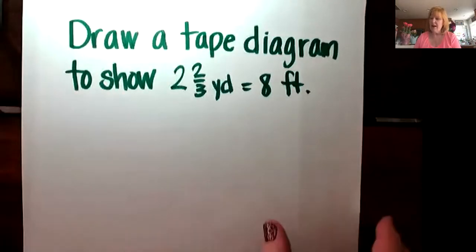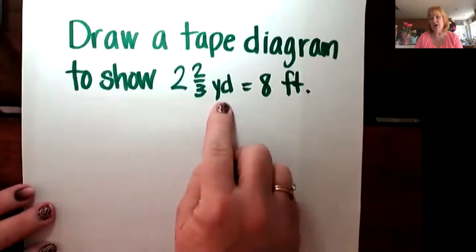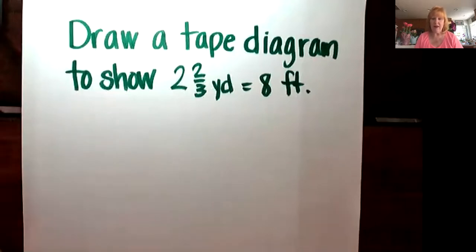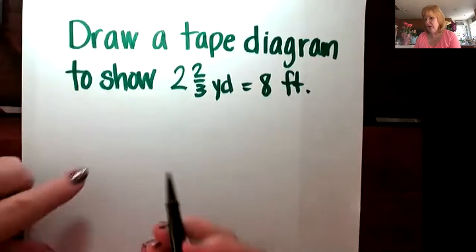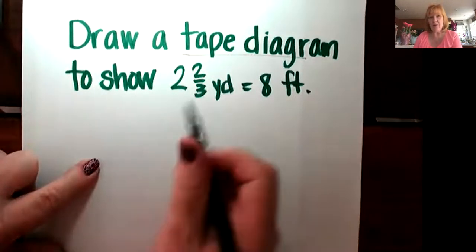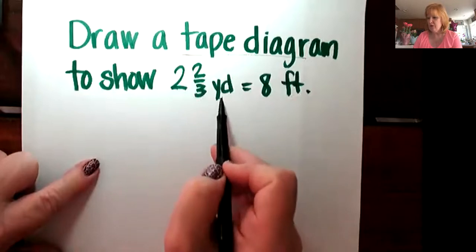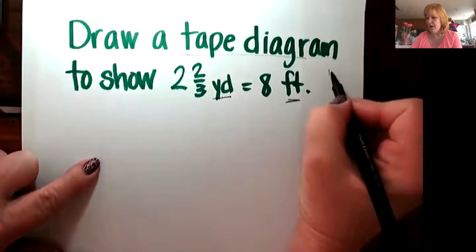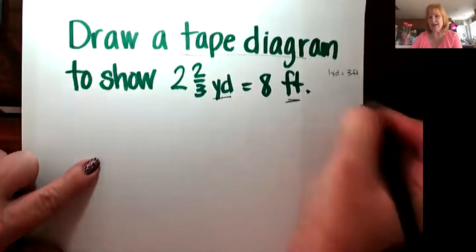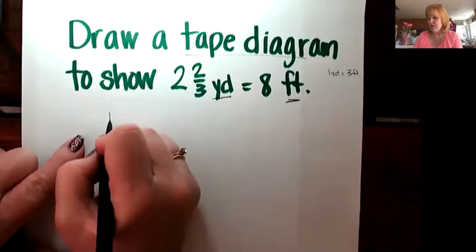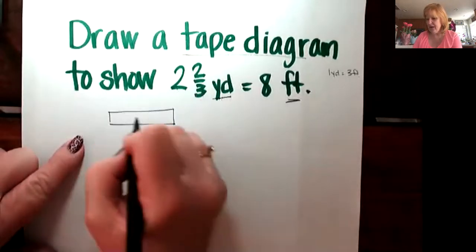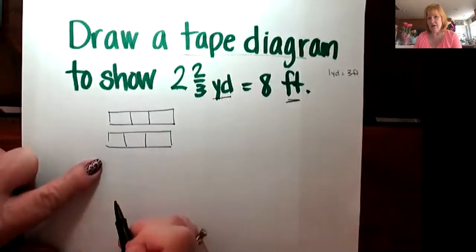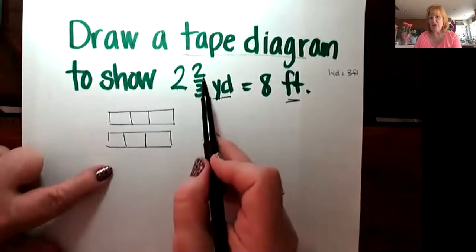One of the first questions says to draw a tape diagram to show two and two-thirds yards is equivalent to eight feet. So we want to make sure that we are drawing a tape diagram. Since it says two and two-thirds yards, I know I'm going to be doing yards and converting them into feet. I know that one yard is equivalent to three feet — that's a conversion we've been working on. So here is one yard, and that yard has three feet in it. Here's a second yard, and that yard has three feet in it. So I've got my two yards, and now it says two-thirds.